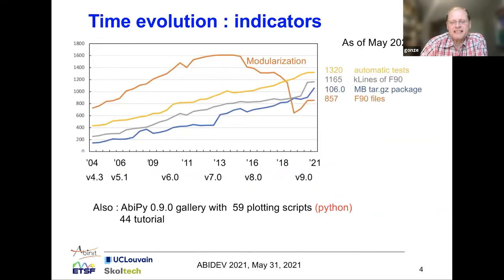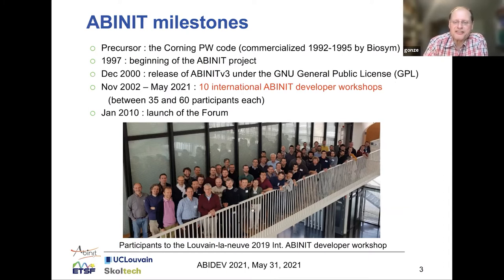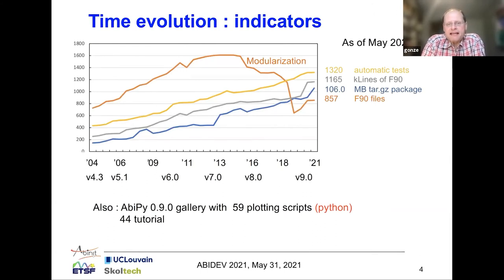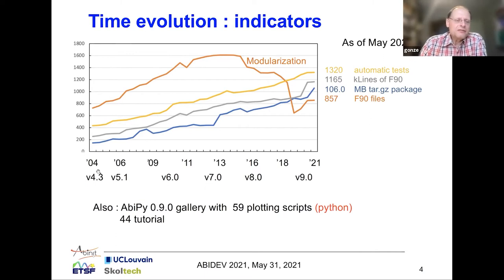This is a picture taken at the previous Louvain-la-Neuve international Abinit developer workshop. We will try to have a group picture this afternoon — we'll see how it works with everybody turning on their camera. At the level of the evolution of Abinit, I usually give some indicators of what is happening — numbered indicators between 2004 and 2021, across the different versions of Abinit.